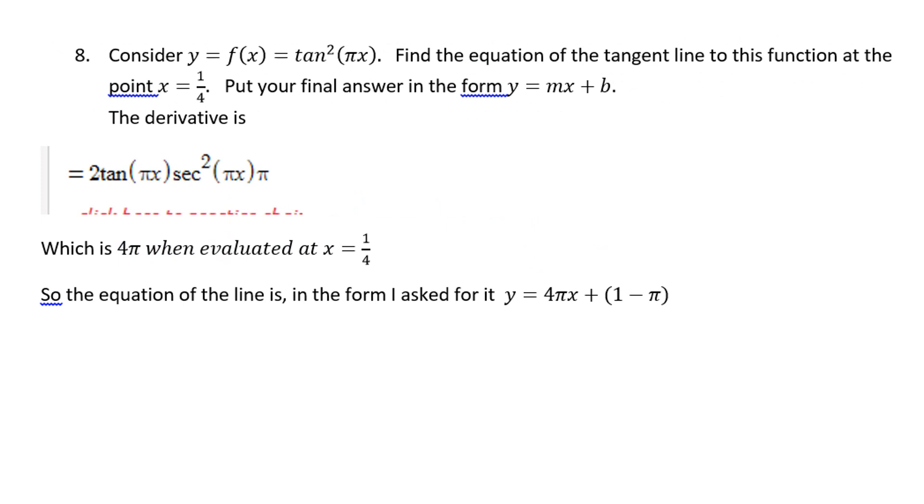Number eight. This is the chain rule involving the tangent function. So there you can see your derivative, and you can figure out what the slope is, and so we have the slope and intercept. In this, the derivative would be five, and the slope would be two and a half, and the intercept would be two and a half.